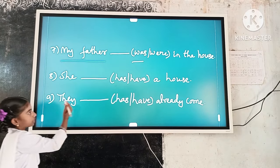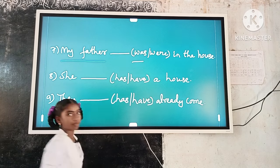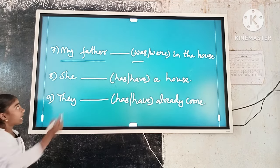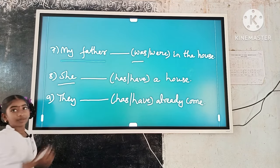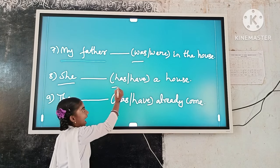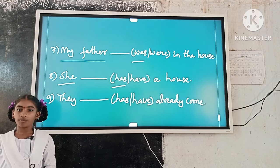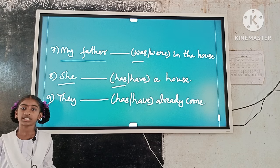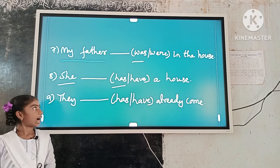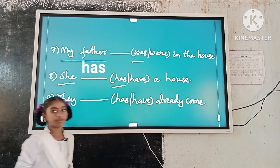Example number 8: She dash a house. Here, the subject is singular. 'Has' is a singular verb form. So, singular subject and singular verb form agree. The answer is: She has a house.